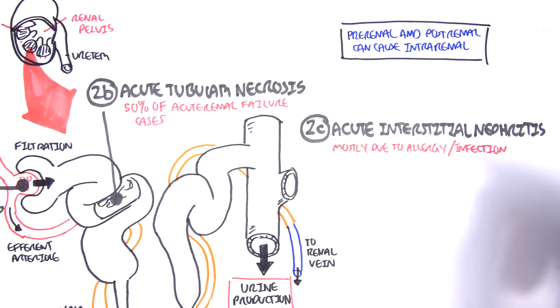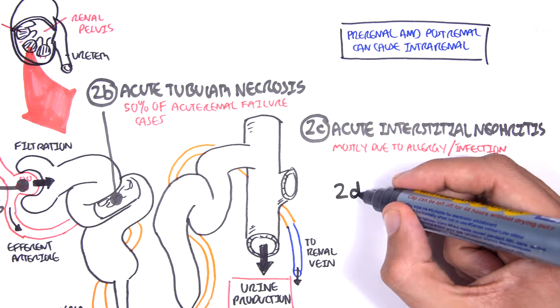And so this leads to the fourth main type of intra-renal cause of acute renal failure, which is vascular.